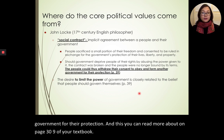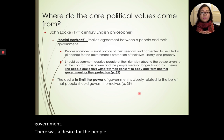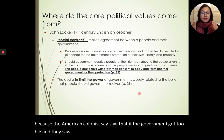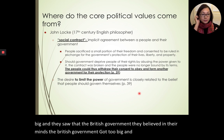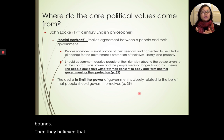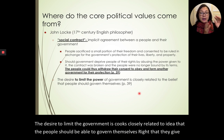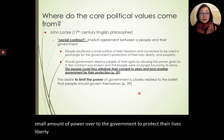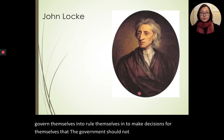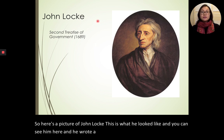There was a desire to limit the power of the government. The American colonists saw that if the government got too big — as they believed the British government had — it would overstep its bounds. The desire to limit the government is closely related to the idea that the people should be able to govern themselves: they give a small amount of power to the government to protect their lives, liberty, and property, but everything else the people govern themselves. The government should not get too big.